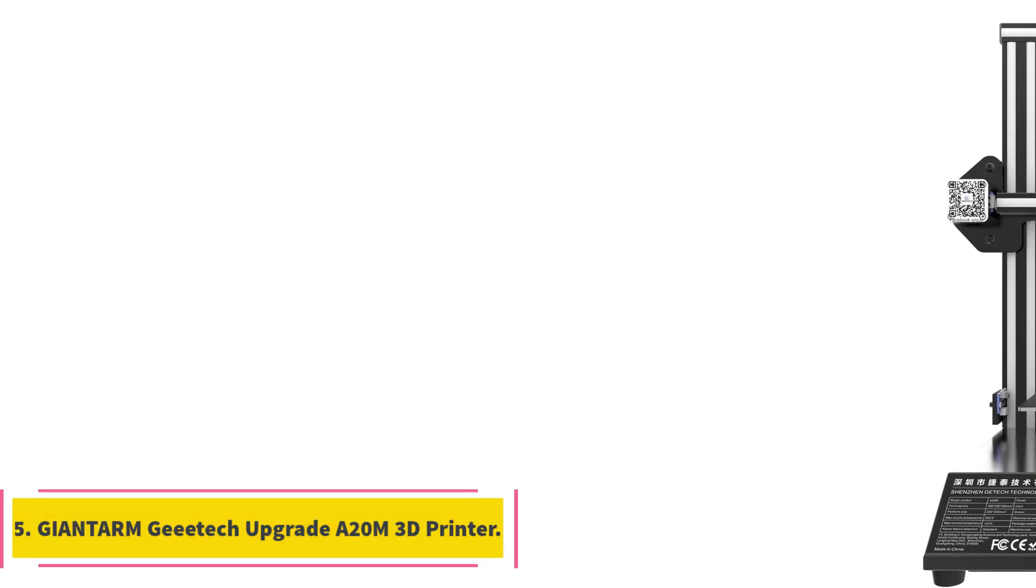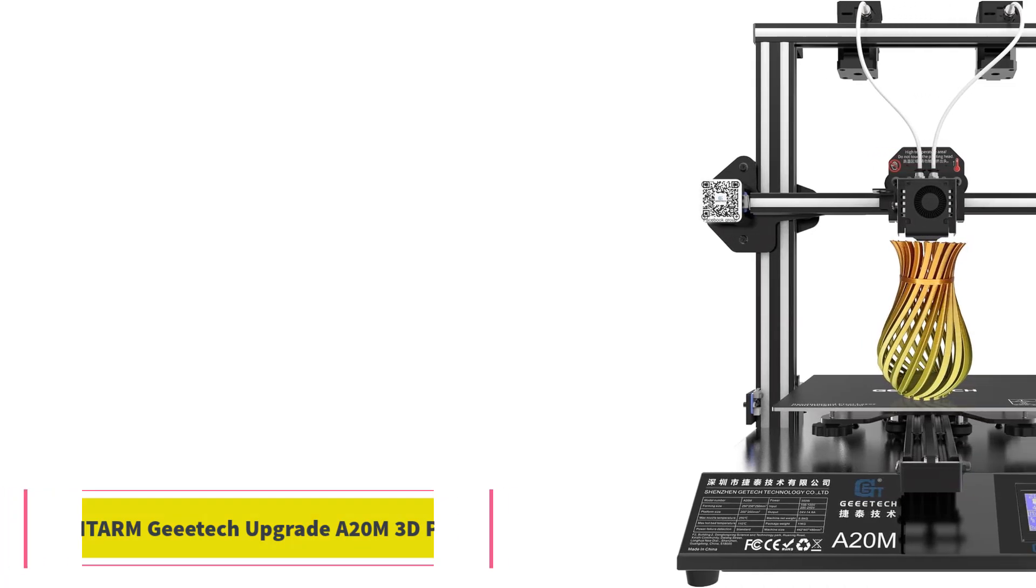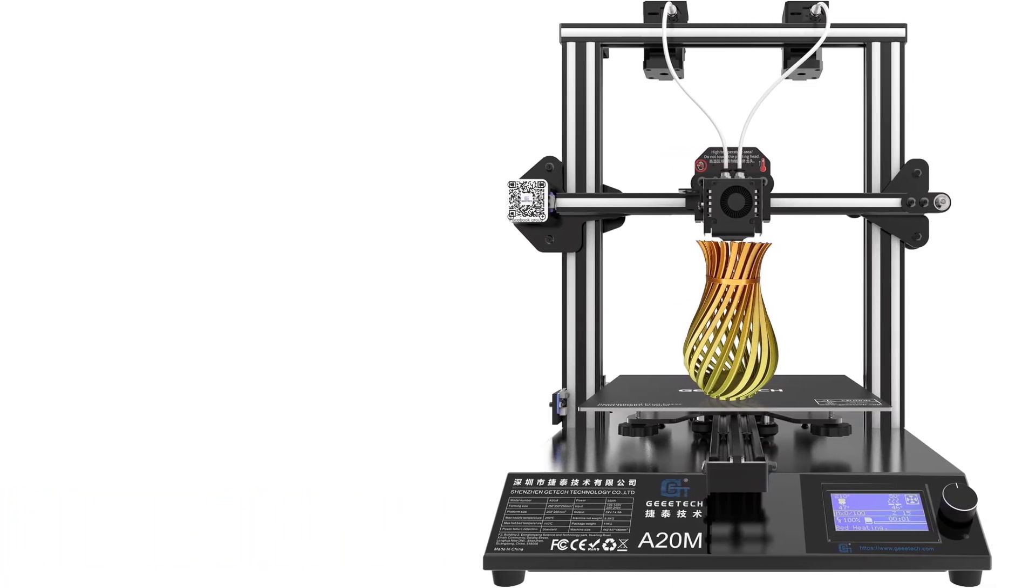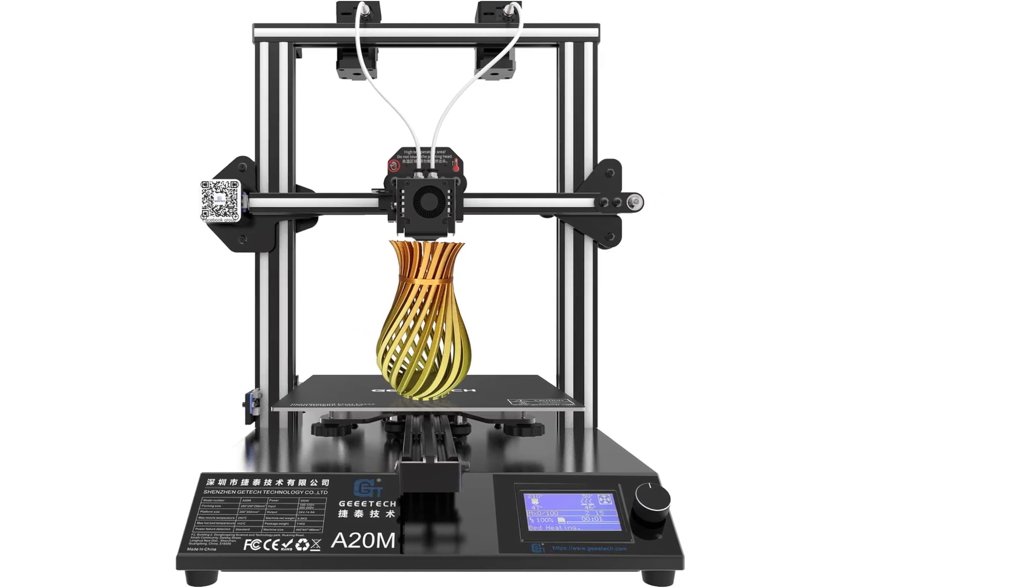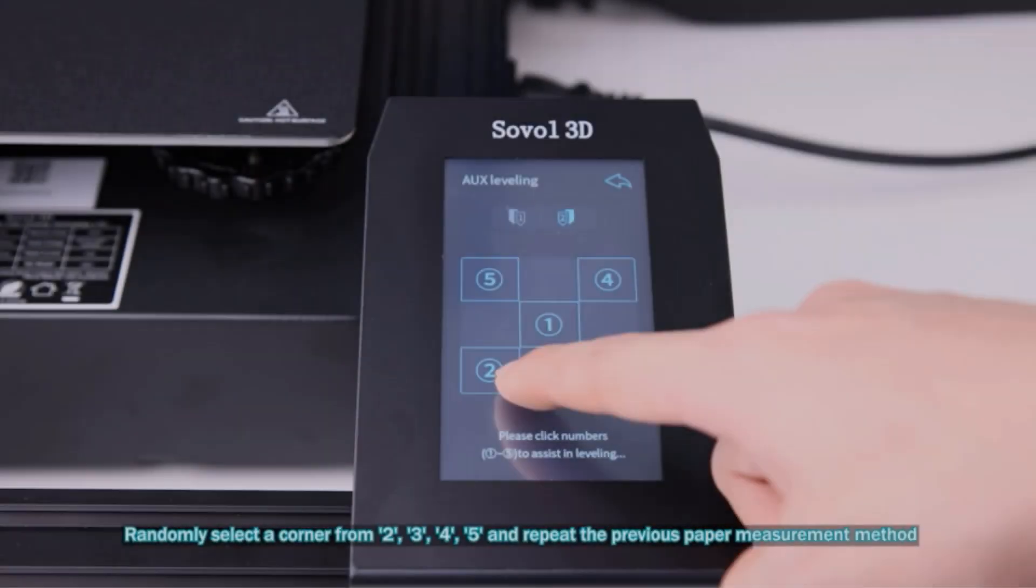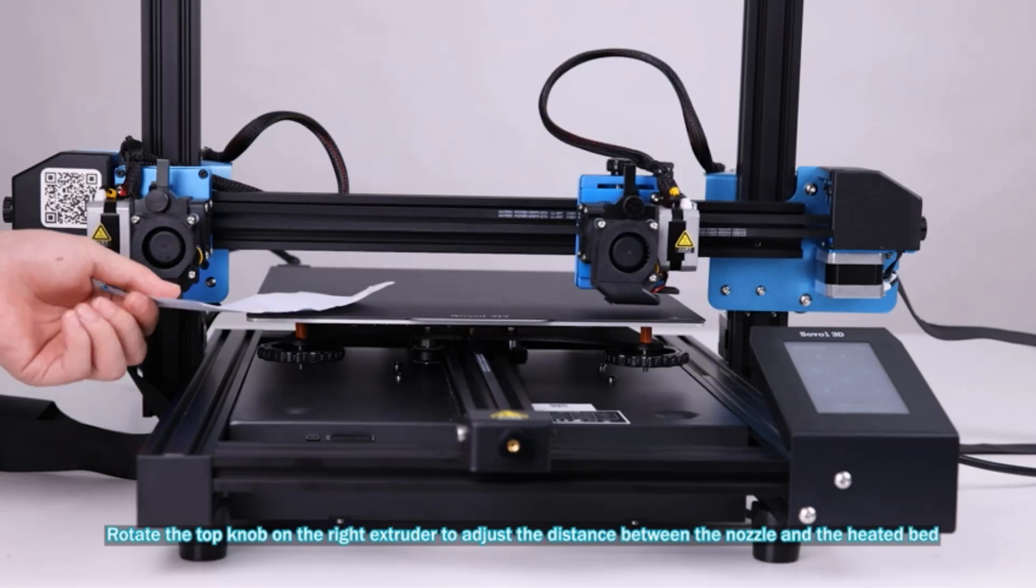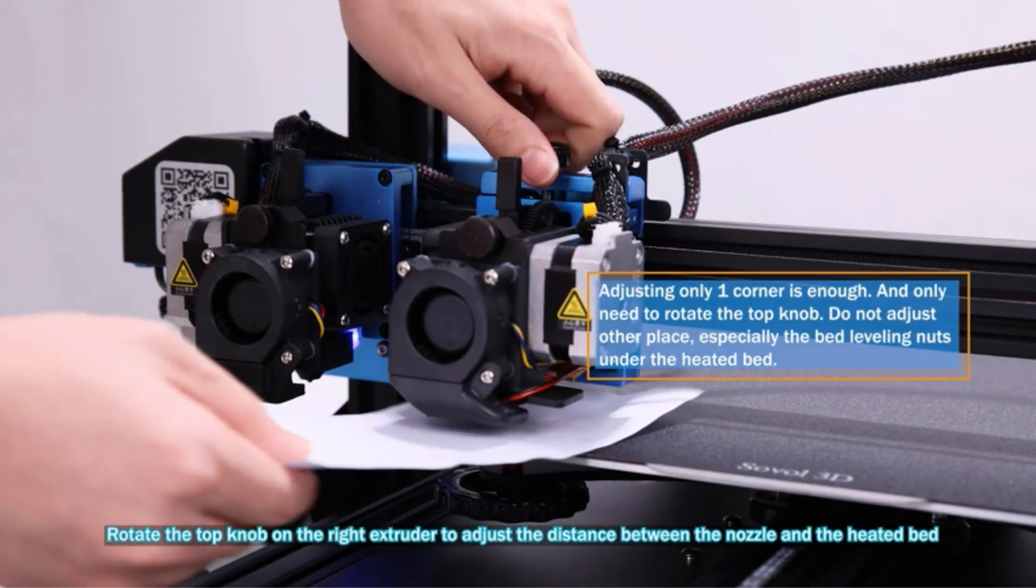Number 5: Giantarm Gitek Upgrade A20M 3D Printer. The Giantarm Gitek Upgrade A20M 3D Printer is a feature-rich option for users looking to explore multicolor 3D printing capabilities. With its 2-in-1 extruder module, this FDM printer enables printing with different colorful filaments through a single nozzle, making it easy to create vibrant and diverse models.